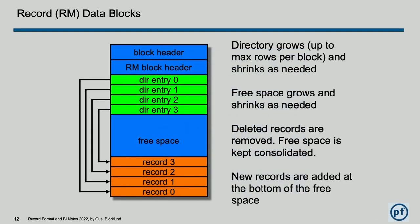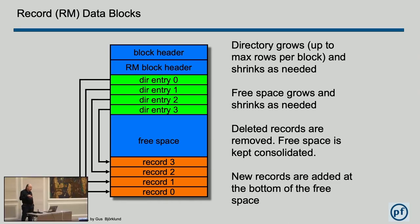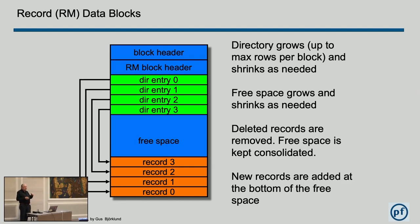Here's a slightly different view to show how the directories work. When you set up a storage area and configure how many records per block you want, that also determines the maximum size of the directory. The directory starts with no entries in a brand-new record block, and as you add records, directory entries get added until you hit the maximum or run out of space. If you delete records, the directory entries can be deleted as well. These structures can vary in size as the database is used.